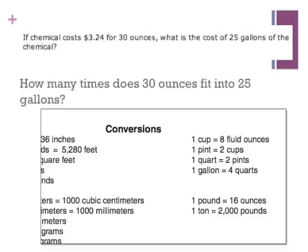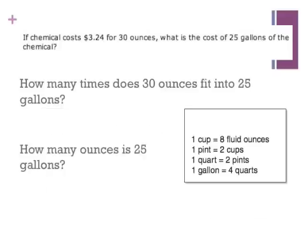To answer that question, we'll return to our old friend the FCAT reference sheet. The FCAT reference sheet will tell us how many ounces are in 25 gallons. But before we figure out how many ounces are in 25 gallons, why don't we figure out how many ounces are in 1 gallon.